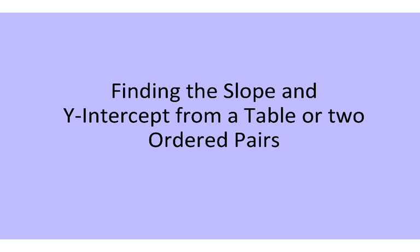In the previous lesson, we talked about finding the slope from a graph. There are also other ways to find the slope, and this is another way that we're going to talk about today. We're going to find the slope and y-intercept from a table, or two ordered pairs.